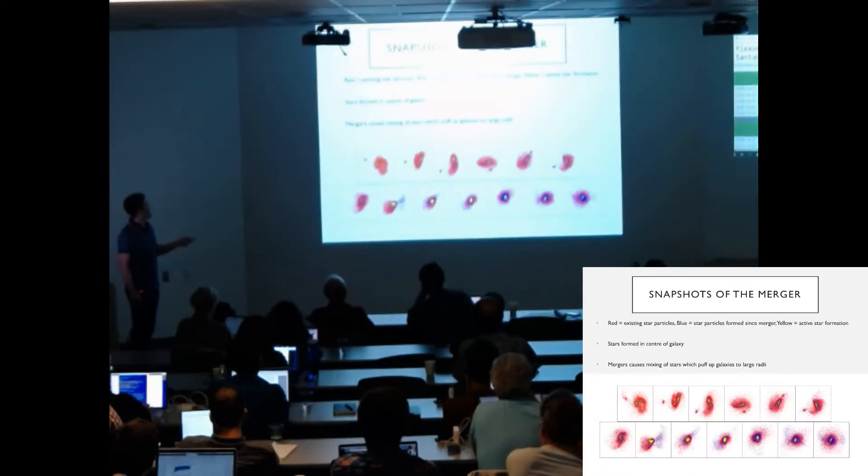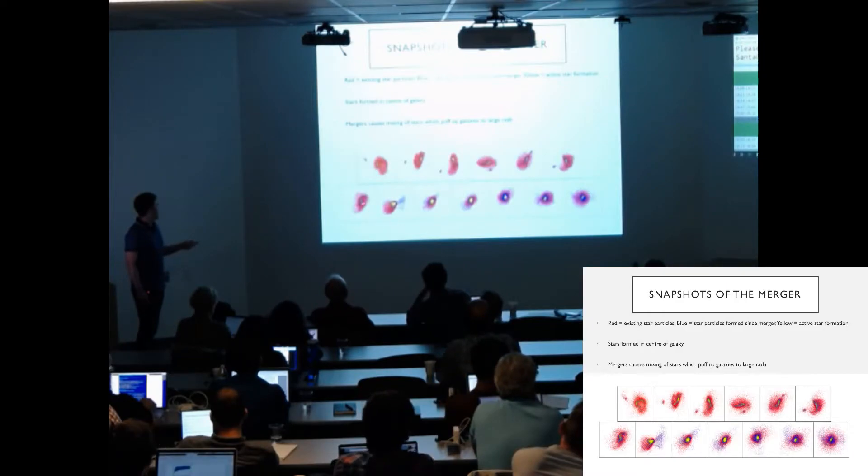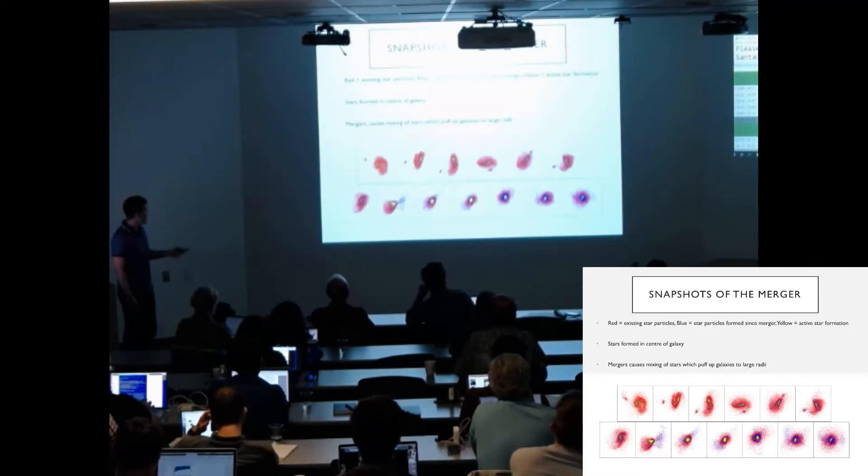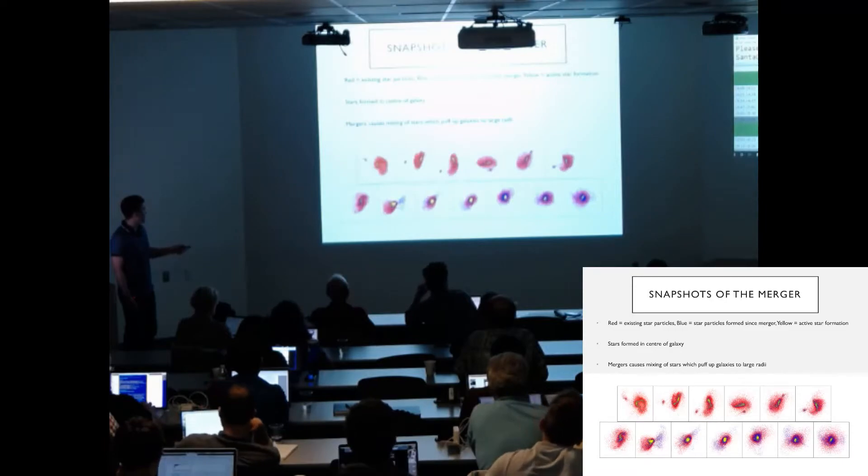So what does these mergers look like when they're going on? Well this is in red, we see the existing star particles before the merger occurs. In blue, star particles that have been formed since the merger started, and yellow shows active star formation. We can see that when the merger happens, stars are blown out in all directions before mixing together and settling into this puffed up spheroid at the end.